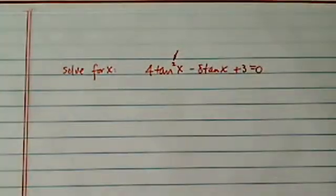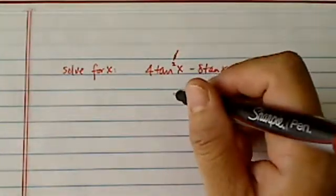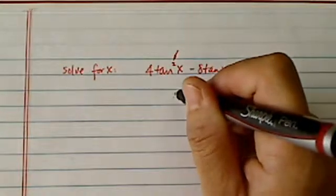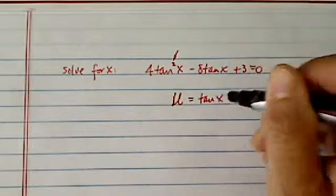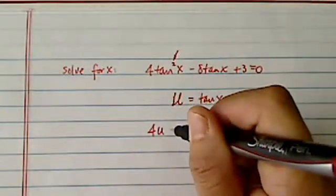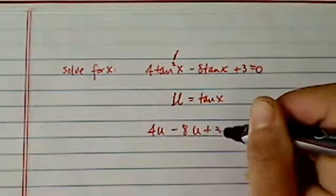This one is a quadratic, so we will require to use factoring. Let's call u is equal to tangent of x. Then you have 4u² minus 8u plus 3 equal to 0.